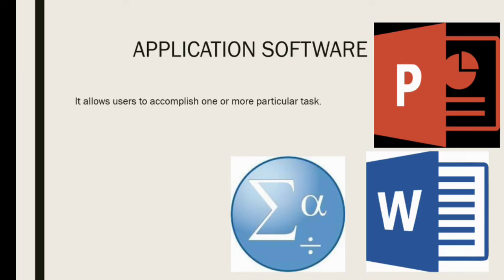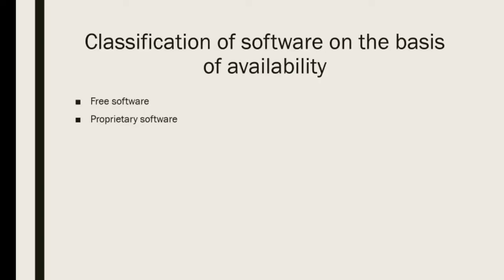Based on the availability of software, it can be classified under two heads: Free Software and Proprietary Software.